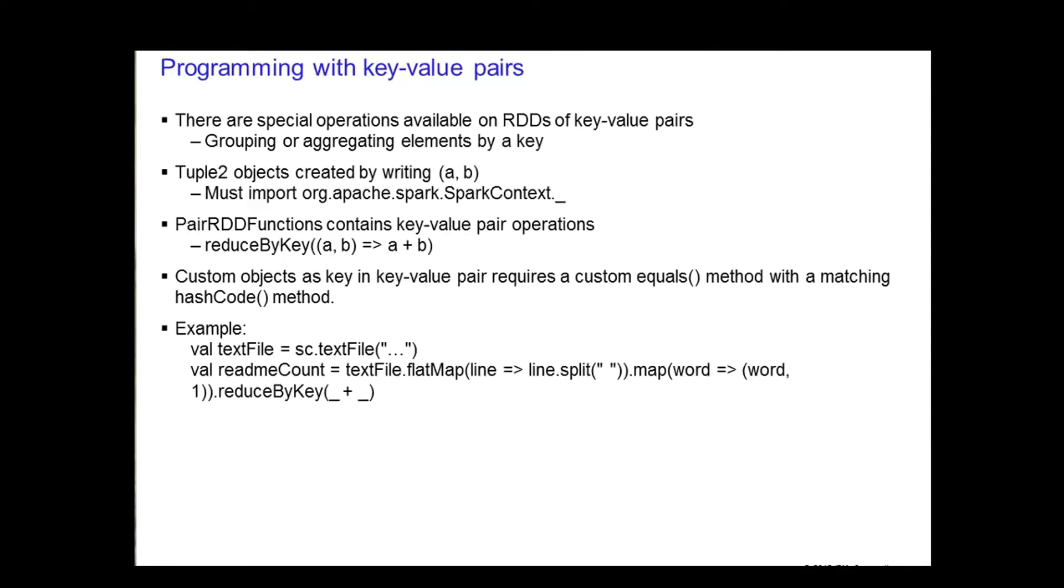There are special operations available to RDDs of key value pairs. In an application, you must remember to import the spark context package to use pair RDD functions such as reduce by key. The most common ones are those that perform grouping or aggregating by a key. RDDs containing the tuple2 object represents the key value pairs. Tuple2 objects are simply created by writing A and B as long as you import the library to enable Spark's implicit conversions.